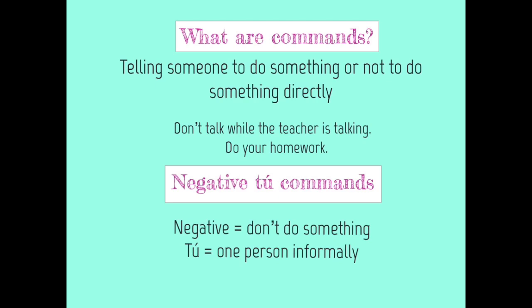In this video, we're specifically going to work with negative tú commands. Negative meaning you're telling someone don't do something — they should not do something. When we're using tú, remember you're addressing a single person informally — someone that you are friendly with, they are your age or perhaps younger, the same people you would use tú with normally. These would be appropriate commands to tell them not to do something.